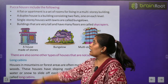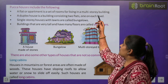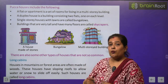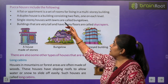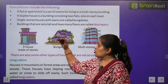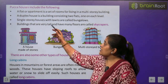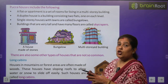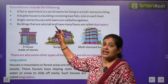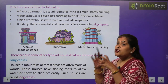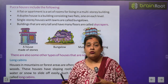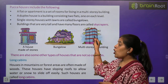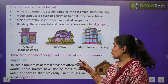पक्का house में निम्न प्रकार के घर शामिल हैं. A flat or apartment is a set of rooms for living in a multi-story building — एक ही floor पर बहुत सारे घर होते हैं. A duplex house is a building that consists of two flats, one on each level — duplex मतलब एक के ऊपर दो मकान, एक नीचे और एक ऊपर. Single-story houses with a lawn are called bungalows. Buildings that are very tall and have many floors are called skyscrapers — इन्हें multi-story building भी कहते हैं.